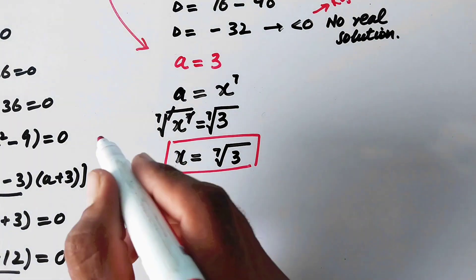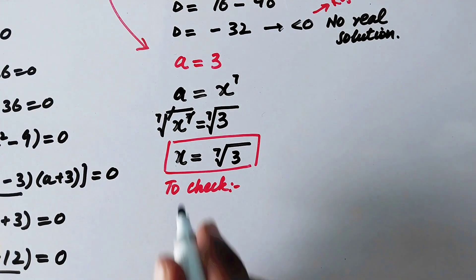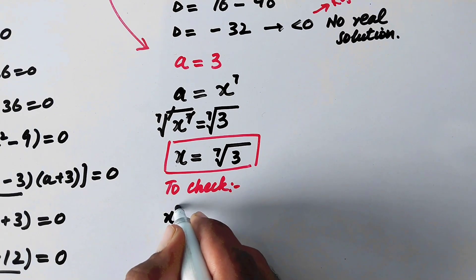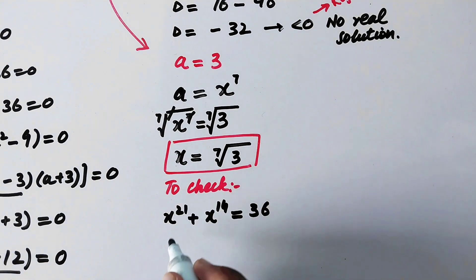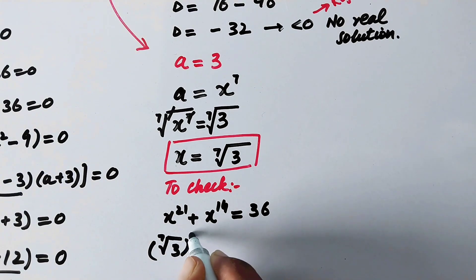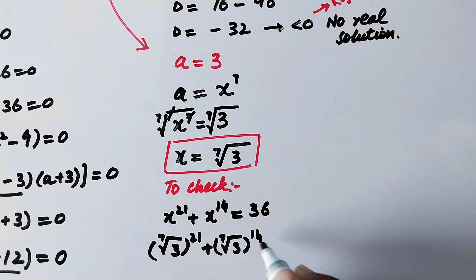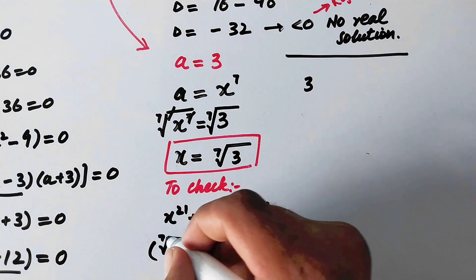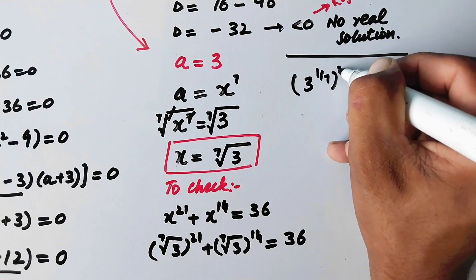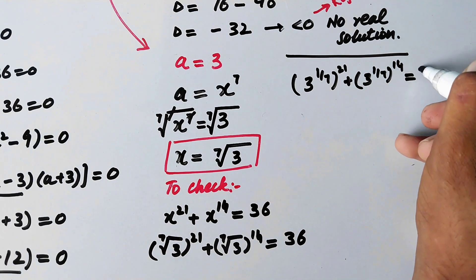Now we will verify whether the value of x is correct. To check, we put the value of x into our original equation: x raised to power 21 plus x raised to power 14 equal to 36. Substituting, we get the 7th root of 3 raised to power 21, plus the 7th root of 3 raised to power 14, equal to 36. The 7th root can be written as 3 raised to power 1 over 7.